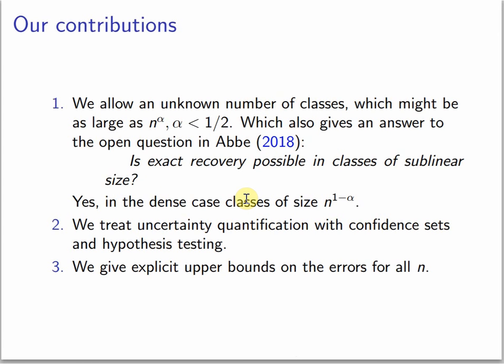What are our contributions? We allow an unknown number of classes which might be as large as n to the power alpha, for some alpha smaller than a half, which gives also an answer to the open question in ABBA. Is exact recovery possible in classes of sublinear size? Yes, in our case, classes of size n to the power 1 minus alpha. We treat uncertainty quantification with confidence sets and hypothesis testing, and we give explicit upper bounds on the errors for all n.